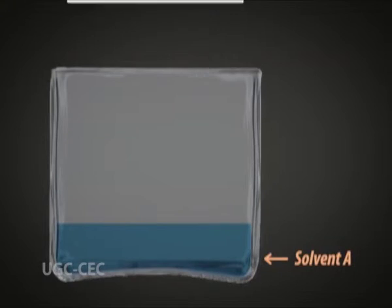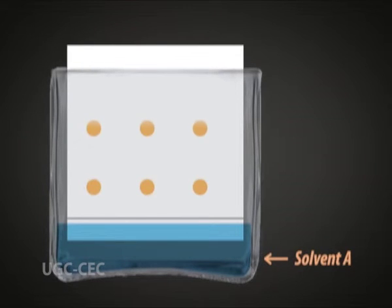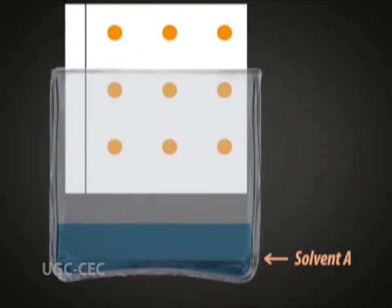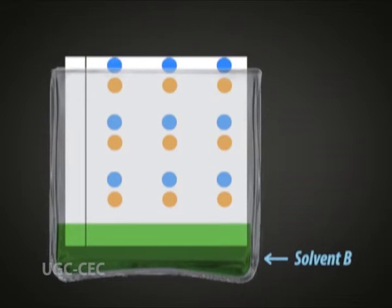Some researchers also perform two-dimensional paper chromatography for the separation of closely related compounds, which may not get separated in one-dimensional chromatography. For this, the first chromatography is carried out in one direction, and after drying, the paper is run in the second direction at right angles to the first, using a second solvent. For example, for separation of amino acids, after spotting the sample on the filter paper, develop the chromatogram using solvent A — a combination of butanol, glacial acetic acid, and water (12:3:5) — and then dry and run again using solvent B, which is a combination of phenol and water.